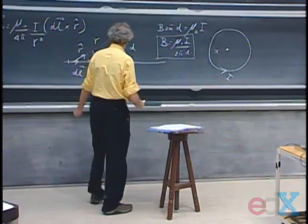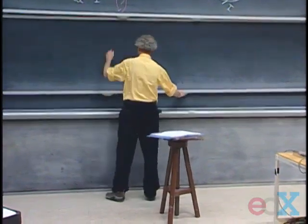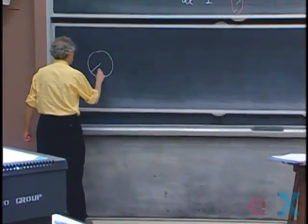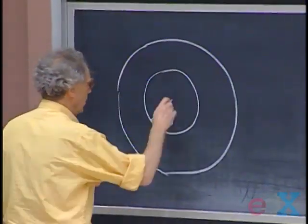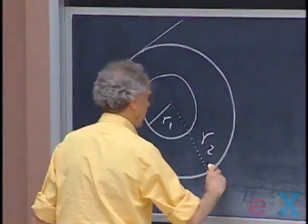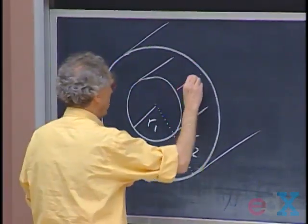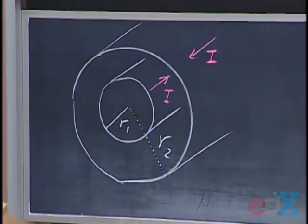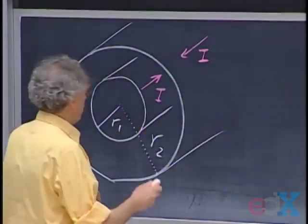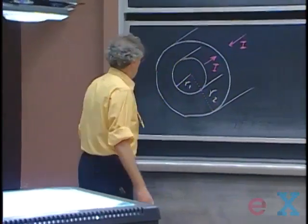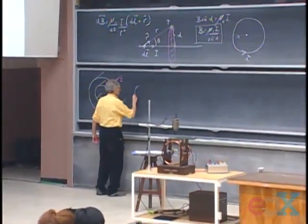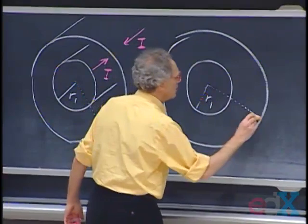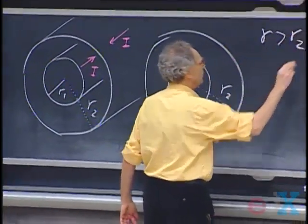Let's now turn to Ampere's law and do a few problems. We need cylindrical symmetry with very few exceptions. I have a hollow cylinder of radius R1 concentric with another cylinder of radius R2 — very long cylinders. Assume that there is a current I flowing on the surface of the inner cylinder, and a current I returning on the surface of the outer cylinder, with the two currents equal in magnitude. I want to know what is the magnetic field everywhere in space. We only see the cross section, with R1 and R2. For r greater than R2, the closed loop is a circle of radius r.